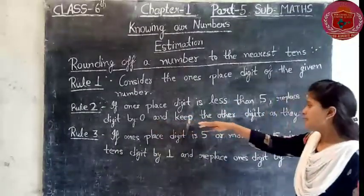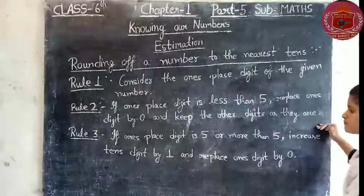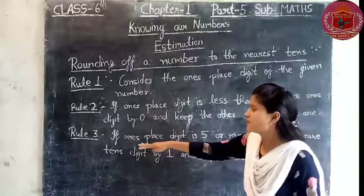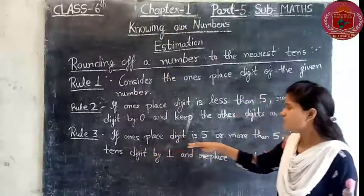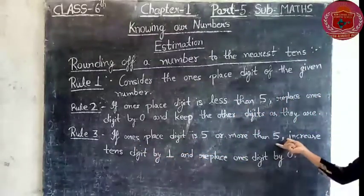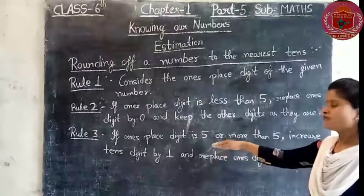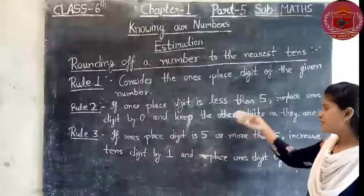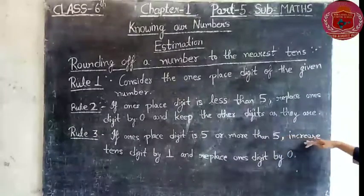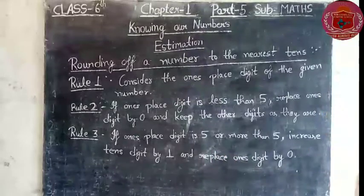And keep the other digits as they are. Rule number 3 says: if the ones digit is 5 or more than 5, that means if the ones digit is 5, then increase the tens digit by 1.